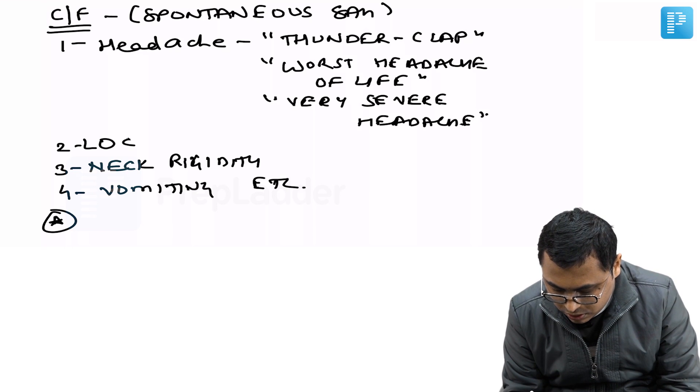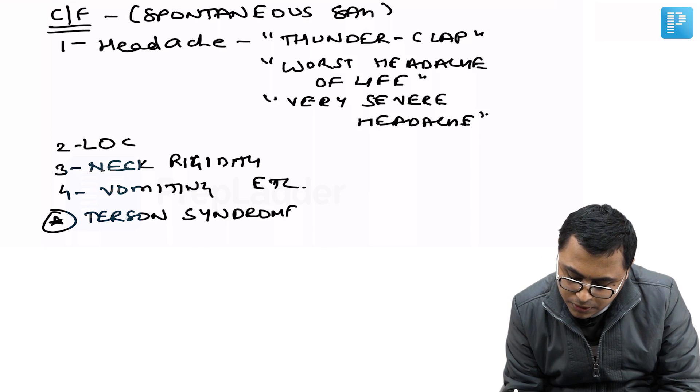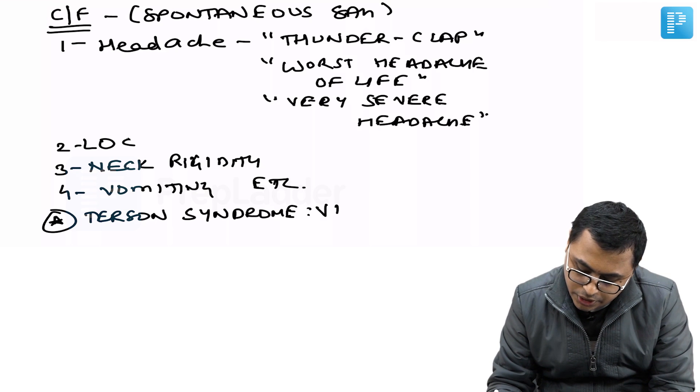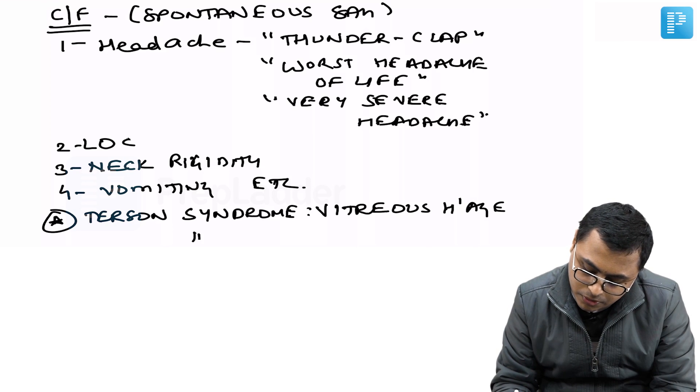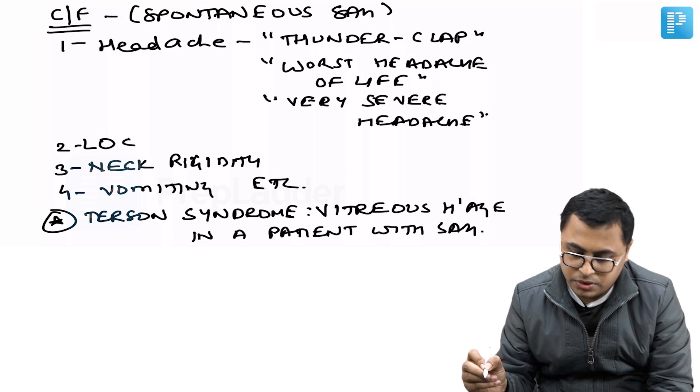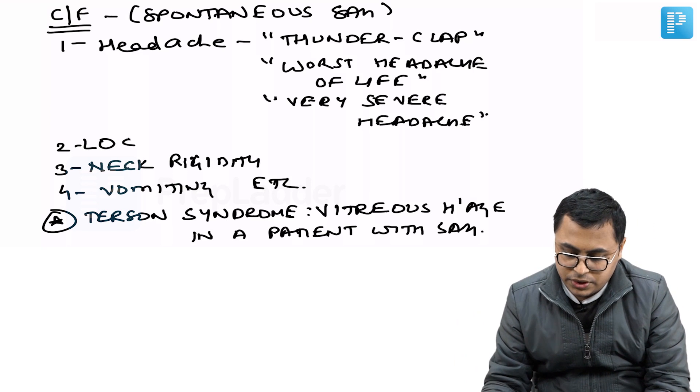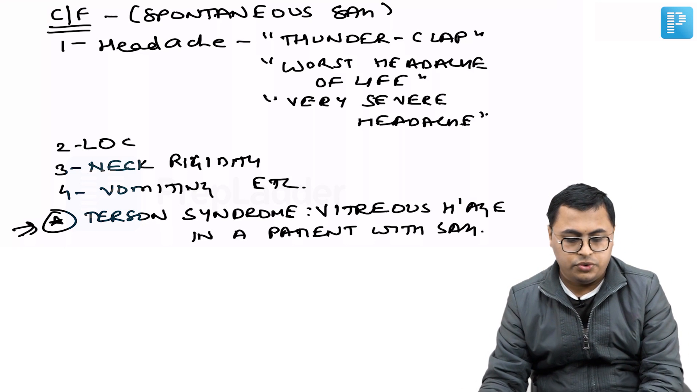Point to be noted: Terson syndrome is one entity in which there is vitreous hemorrhage in a patient with subarachnoid hemorrhage. This is an important point you should remember.